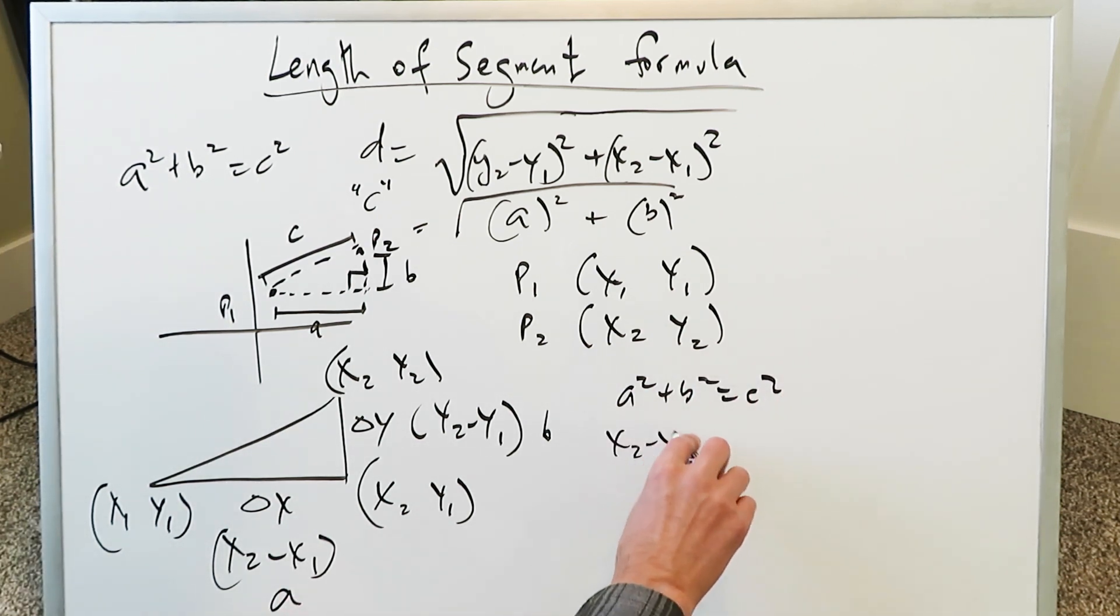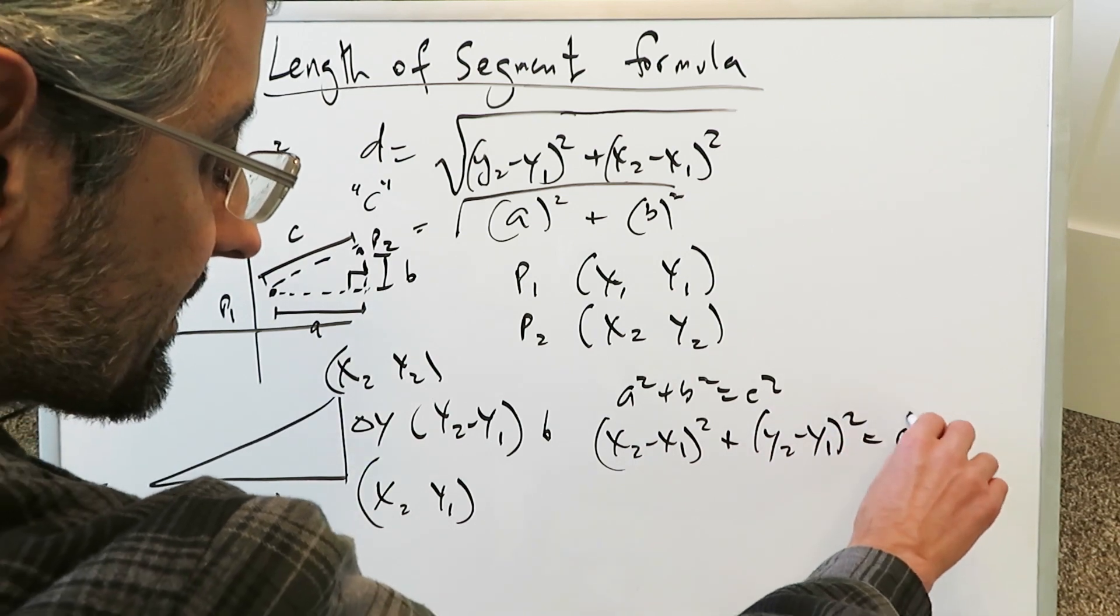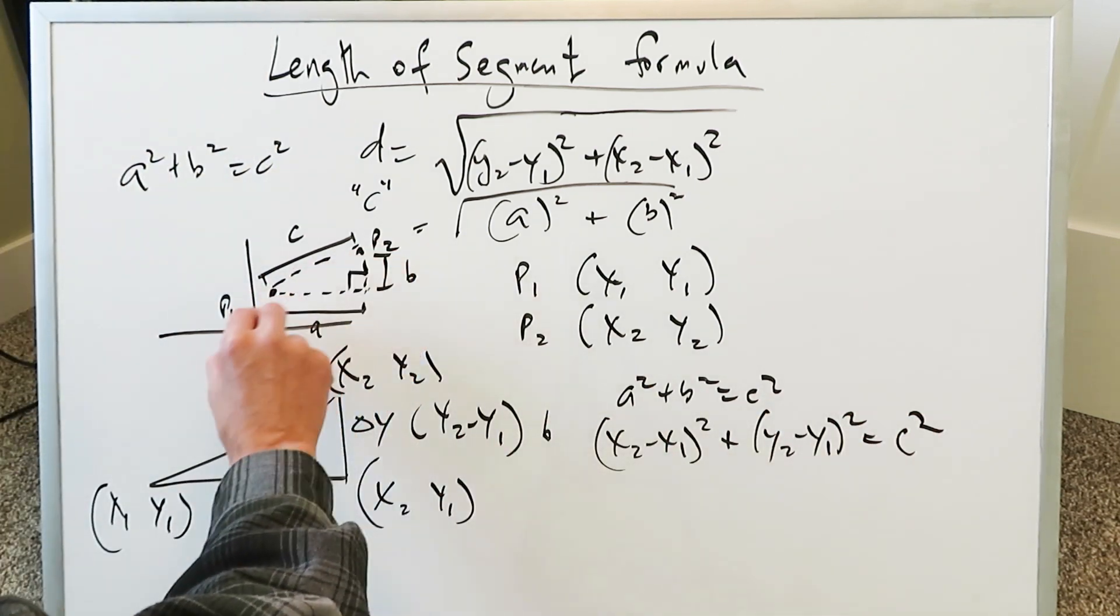The change in the x over here is really x2 minus x1. The change in the y over here is really y2 minus y1. And that right there represents your a, this here represents b.